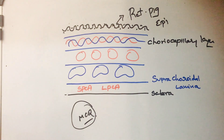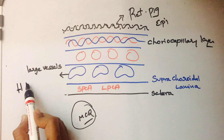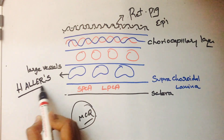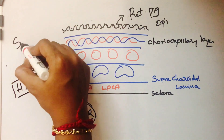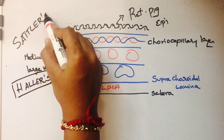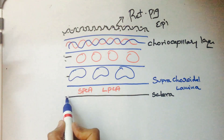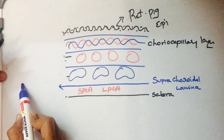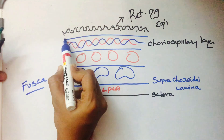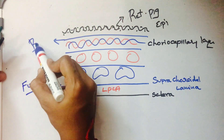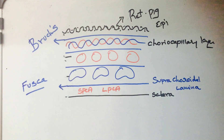The outermost layer is sclera, middle layer is choroid, and innermost layer is retina. The layer of large vessels has a specific name called Haller's layer. The layer of medium vessels is called Sattler's layer. These are the two named layers in the choroid. The layer just beneath the sclera - between the choroid and sclera - is called the suprachoroidal lamina of fusca, and the layer between the retina and choroid is called Bruch's layer.